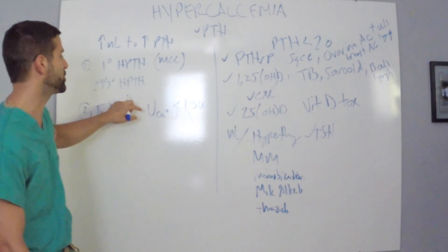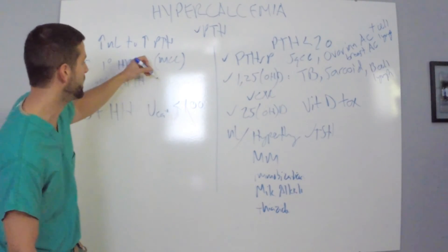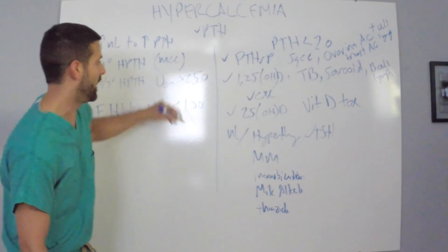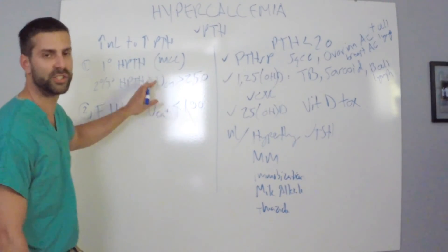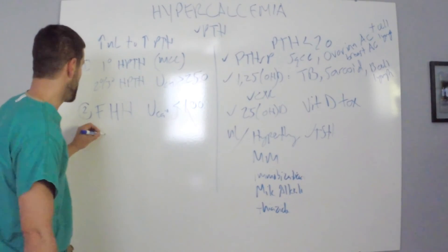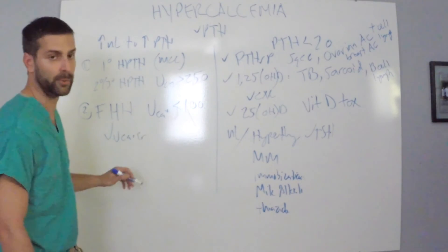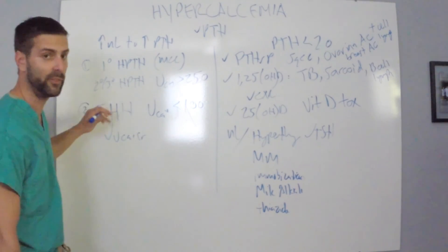And one of the reasons, one of the ways, actually, that you can differentiate these two is that the urine calcium here is going to be less than 100, and the urine calcium here is going to be greater than 250. I don't know what to make of the people who lie in the middle, but these are the general numbers that you can see. You can also check a urine calcium to creatinine ratio to see if you can differentiate these any further.